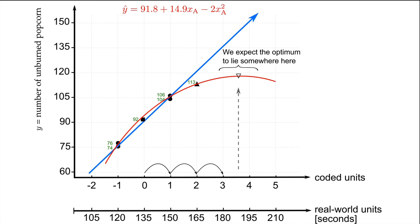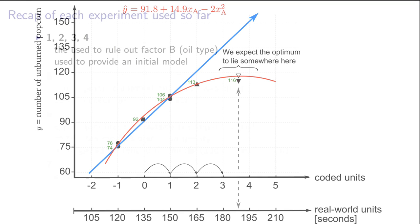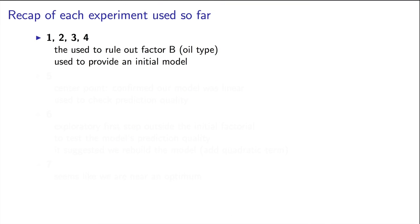So it's a real-world value of 189 seconds of cooking time. Let's go run that experiment now. We predicted a value of 118, and the actual experiment gives us a value of 116. That's pretty impressive. In seven experiments, we seem to have achieved very good predictions and a local optimum in the system. Let's recap our experiments.